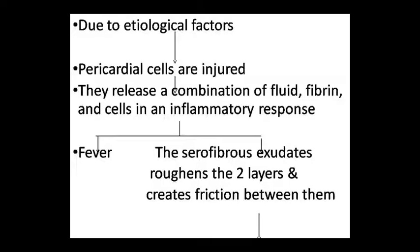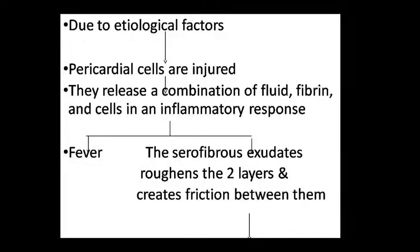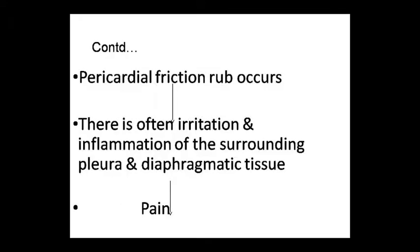There will be two outcomes. First, the person will resolve, and second will show sero-fibrinous exudate. Exudate is a protein-rich fluid which will roughen the two layers and create friction between them. This pericardial friction leads to irritation and inflammation of the pleural and diaphragmatic tissue on all sides, causing pain.